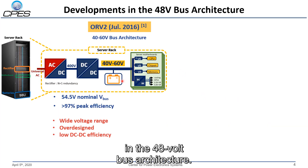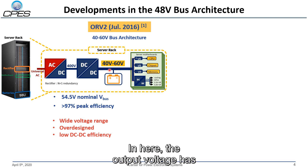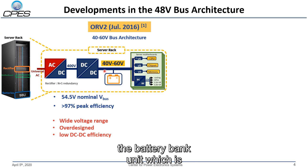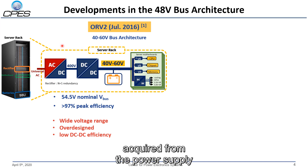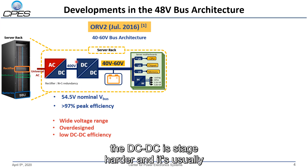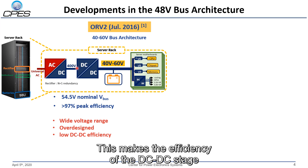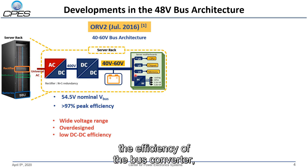There have been some developments in the 48V bus architecture. In 2016, the OpenCompute project released the OpenRack version 2 standard, ORV2. Here, the output voltage has a wide range from 40V to 60V. The nominal output voltage is 54V to control the charging profile of the battery bank unit directly connected to the bus, with a peak efficiency requirement of more than 97%. However, there are limitations: the wide output voltage range makes DC-DC stage design harder and usually over-designed, lowering the efficiency of both the DC-DC stage and the 48V to 12V or 1V bus converters.